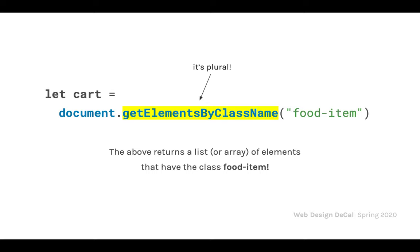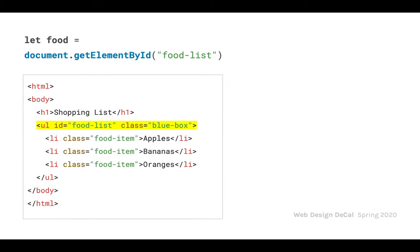Important note: 'elements' is plural in getElementsByClassName but not in getElementById — it's a small distinction but without the 's' the class name function won't work. So remember: it's getElements (plural) by class name, and getElement (singular) by ID.